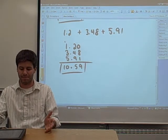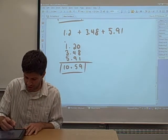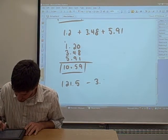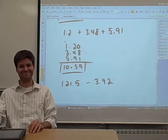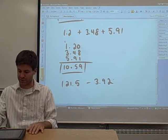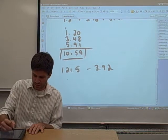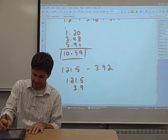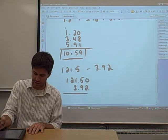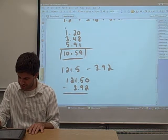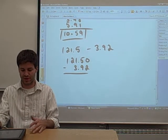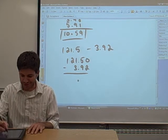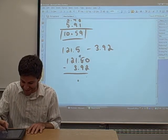Subtraction is really the same thing. Let's do it again. 121.5 minus 3.92. Again, the trick is the same. You line up the decimals. 121.5, 3.92. If you want, fill in any gaps with zeros. Then you subtract like you would subtract any two numbers, which involves borrowing.